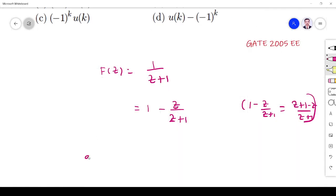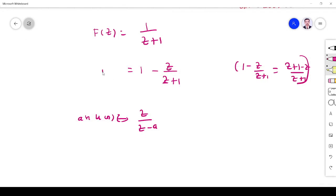Because I know for a^n u(n) the z-transform is z/(z-a). So I want the numerator to also be z. That will give a standard answer.